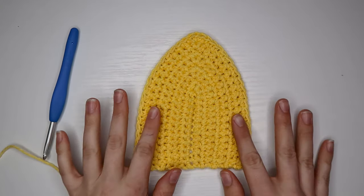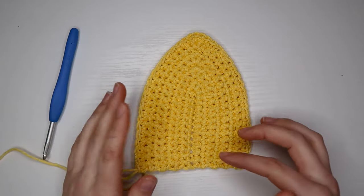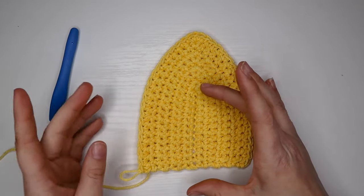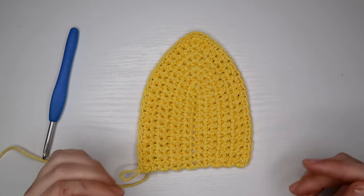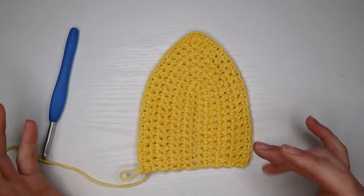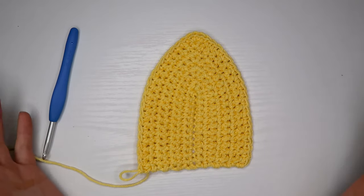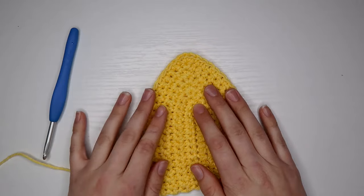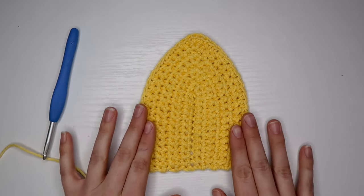The more rows you add, obviously the bigger it will get. The longer you make your base chain, the taller it's going to be. You can mess around with this however you want and make whatever sizes you want, but for this particular cup I'm going to be doing fourteen rows.